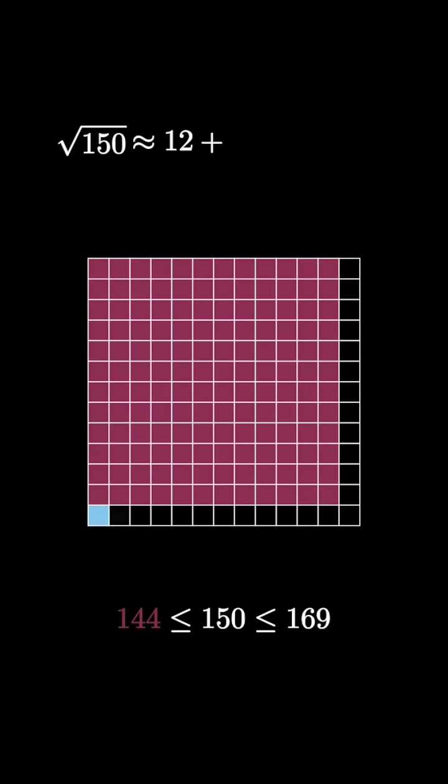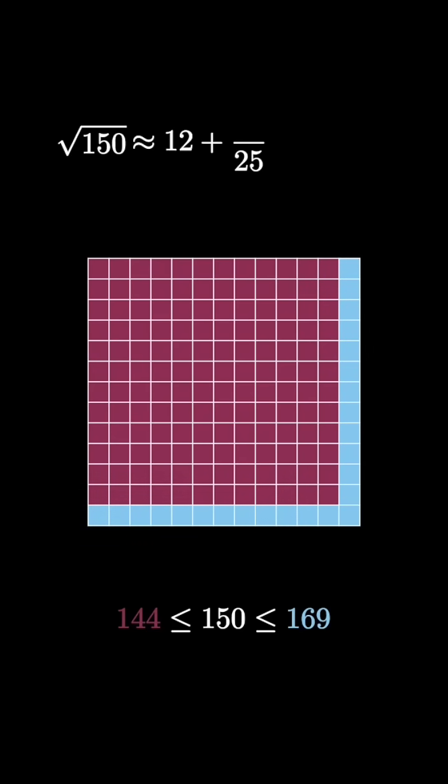It turns out that there are still 25 unshaded squares inside the 13 by 13 diagram, and since we've already shaded 144 of them, we only need to shade 6 more to get up to 150, and that means that we shade an extra 6/25ths of this diagram.